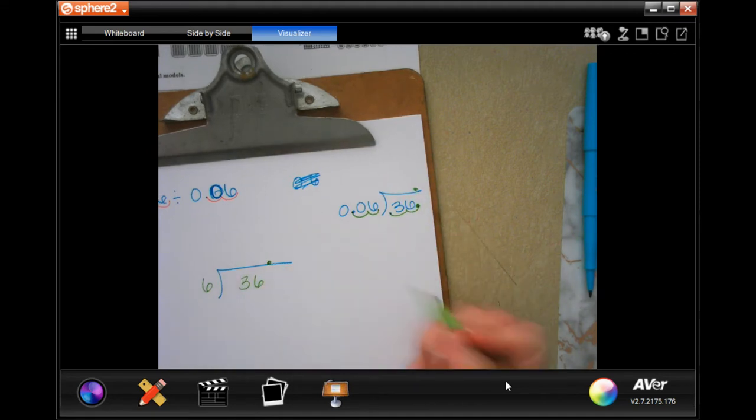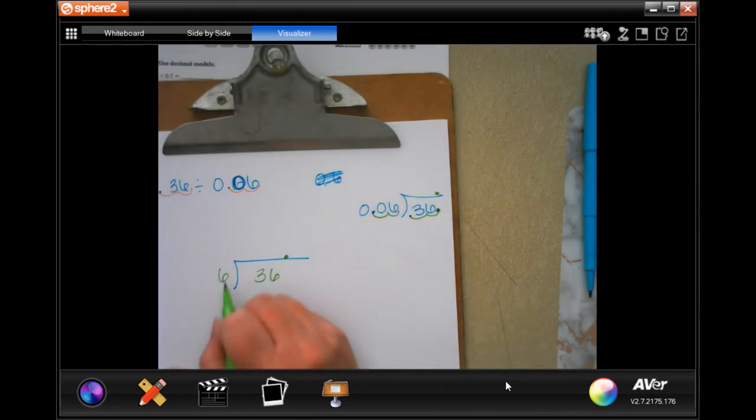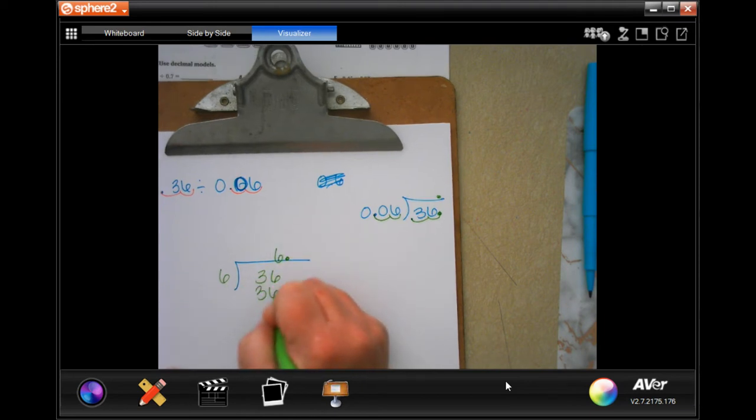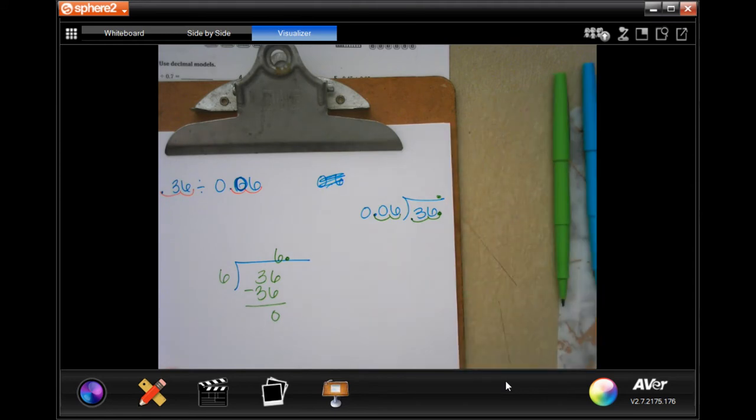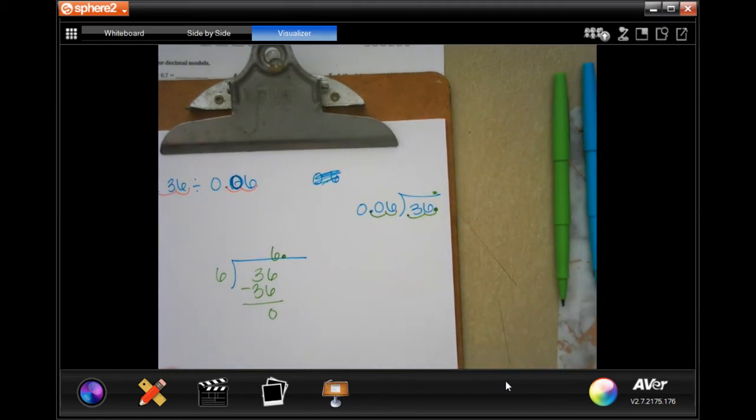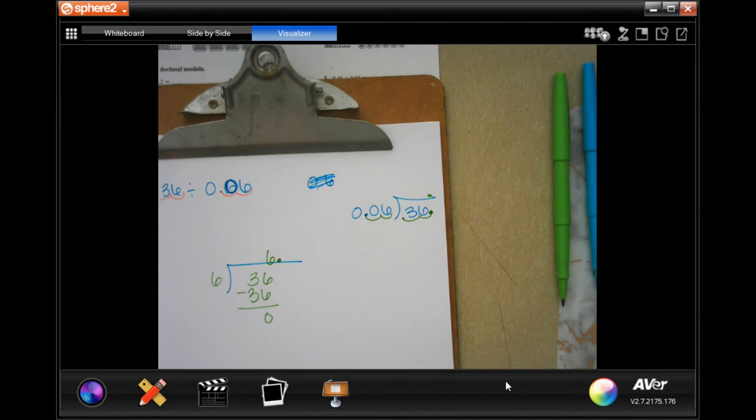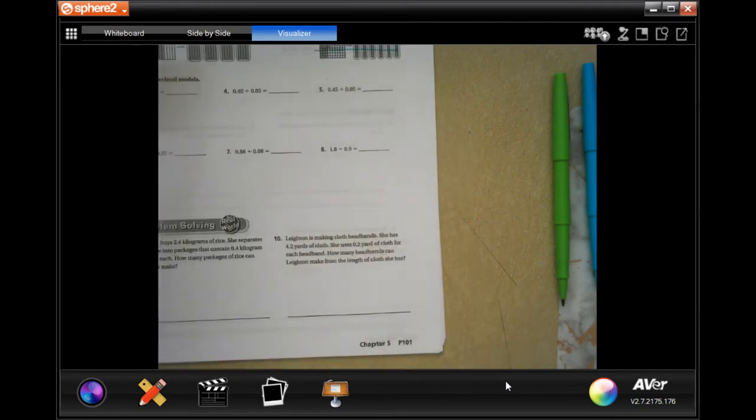See that? So now I have 6 outside and 36 inside. Well, 6 goes into 36 six times, which is 36. Subtract and get zero. So just move the decimal from outside the box to inside. You can't have a decimal outside the box, so move it and then move the one inside the box.